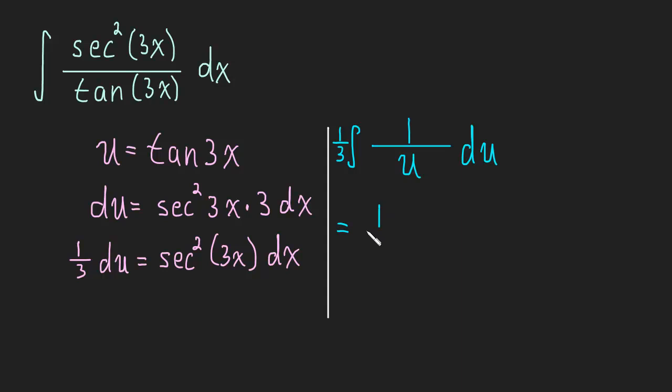Okay, and now we have a simple log rule. We have 1 third times the natural log of the absolute value of u plus c, and then we'll plug back in what is u. u is tan of 3x plus c.